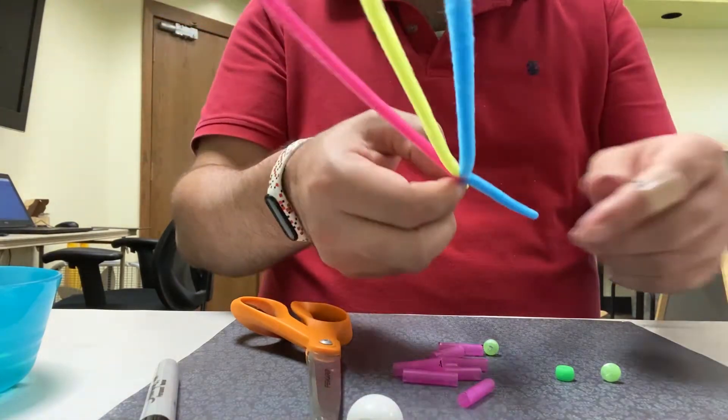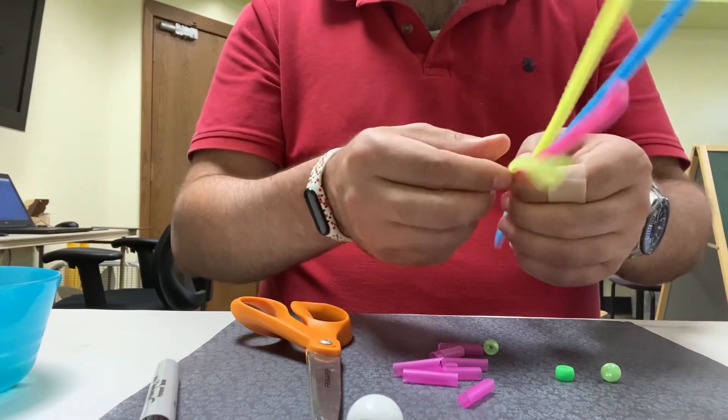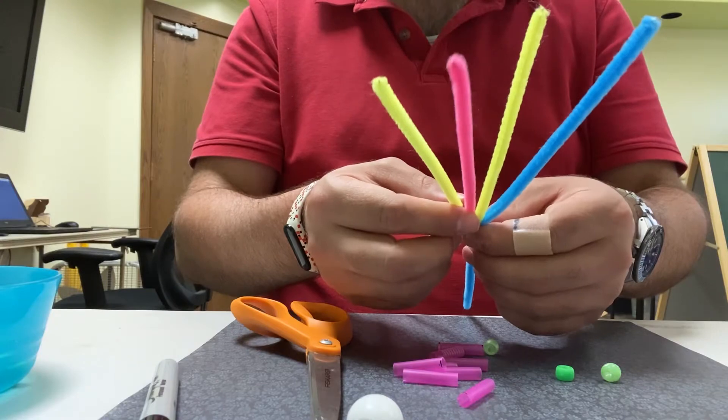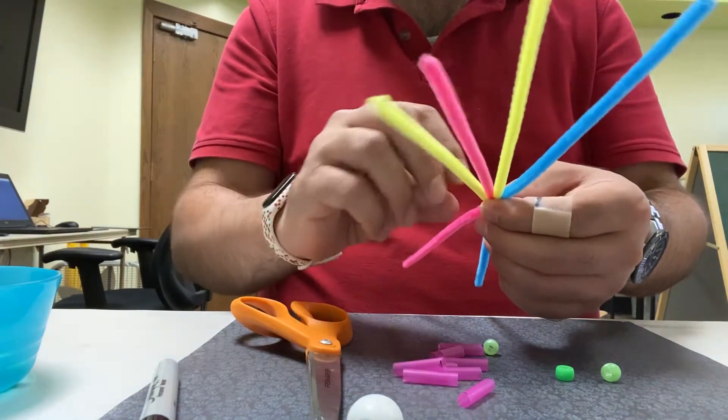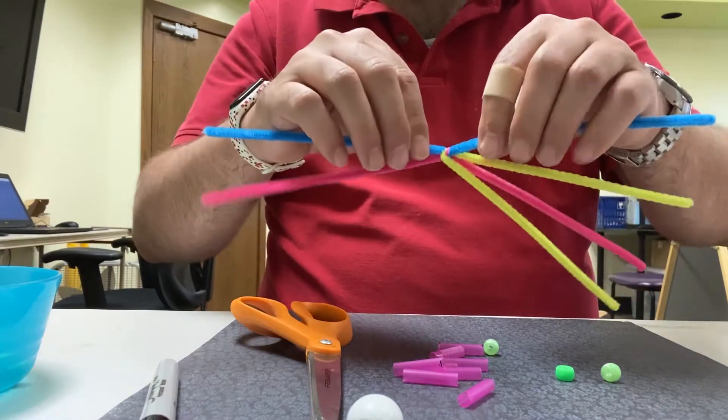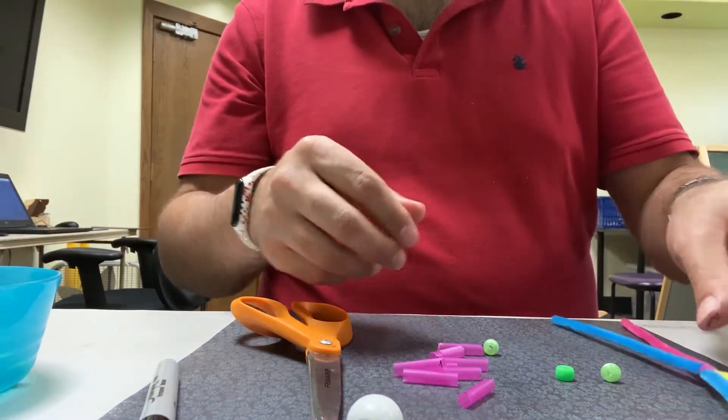Now our second step is we're going to move one of them up so that you have four ends on one side of the twist and two ends on the other side of the twist. Just like that. Great. Now put that to the side.